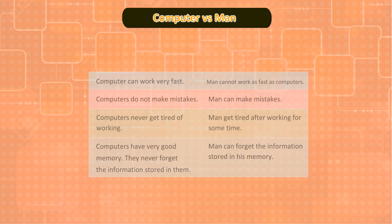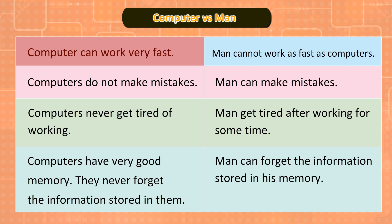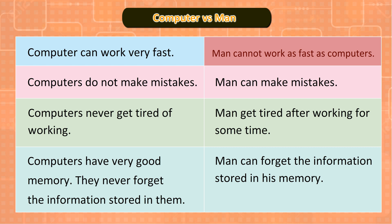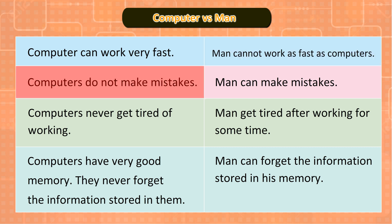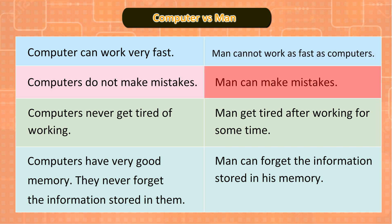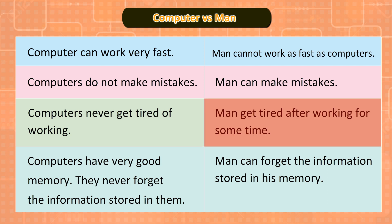Computer versus Man: A computer can work very fast, but man cannot work as fast as computers. Computers do not make mistakes, while man can make mistakes. Computers never get tired of working, but man gets tired after working for some time.